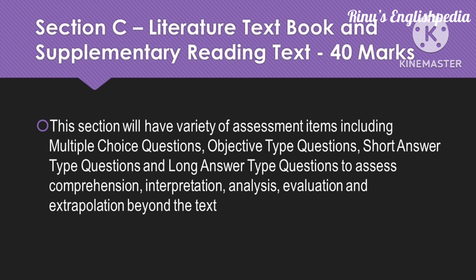The third section is the literature textbook and supplementary reading text, with a weightage of 40 marks. It includes a variety of assessment items — multiple choice questions, objective type questions, short answer type questions, and long answer type questions — which assess the student's ability to comprehend, interpret, analyze, evaluate, and extrapolate beyond and across the text. 'Beyond the text' means making connections in real-life situations, and 'across the text' means making connections between two chapters.